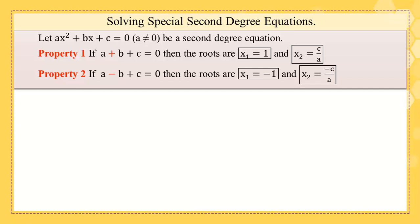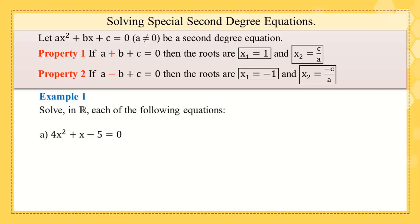The second property: if you notice that a - b + c = 0, you can also find the roots directly. The first root x₁ = -1 and the second root x₂ = -c/a.